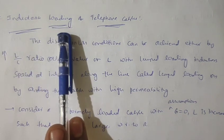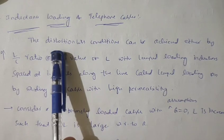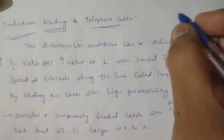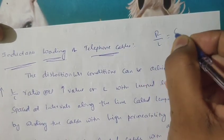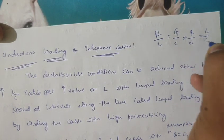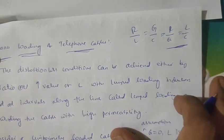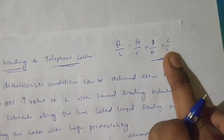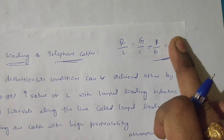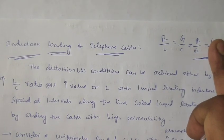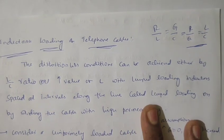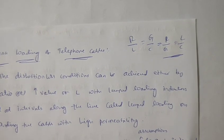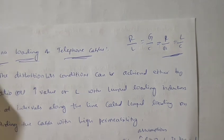To get the distortion-less condition on the telephone cable, we know the formula R/L = G/C, or equivalently R/G = L/C. This is the condition for distortion-less output. So we are going to increase the inductance value. By increasing the inductance value on a cable, we will get less amount of distortion. We can add inductance in three different ways: with lumped loading, patched loading, and continuous loading.